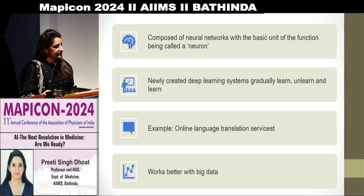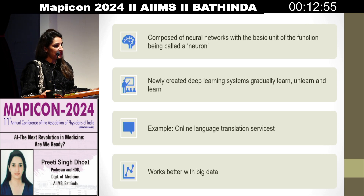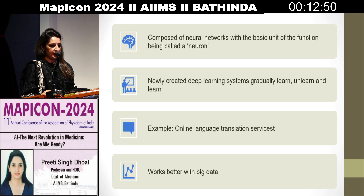Deep learning is composed of neural networks, with the basic unit of function called a neuron. Newly created deep learning systems gradually learn and improve — one example is online language translation services that work better with big data.